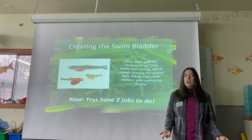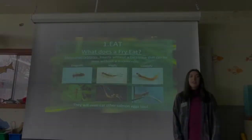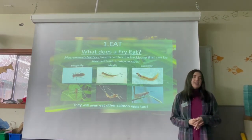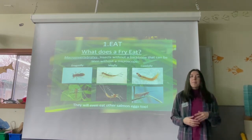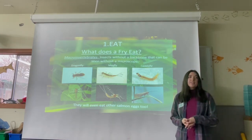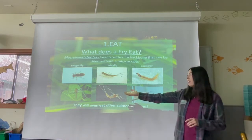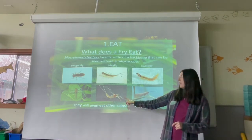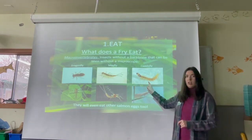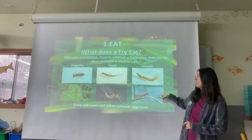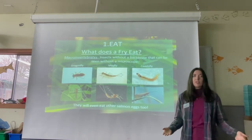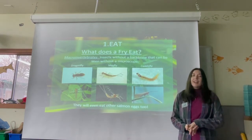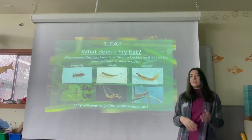Our fry now have two important jobs. The first is to eat. Macroinvertebrates are a key part of their diet — insects without a backbone that you can see without a microscope. Some examples include dragonflies, mayflies, and caddisflies. These insects live in streams in their immature, aquatic form, making them easy and abundant food for our fry. Salmon also like to snack on other salmon eggs, so if they find some redds along the way, they might eat those too.